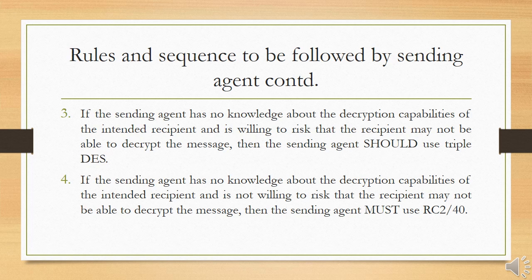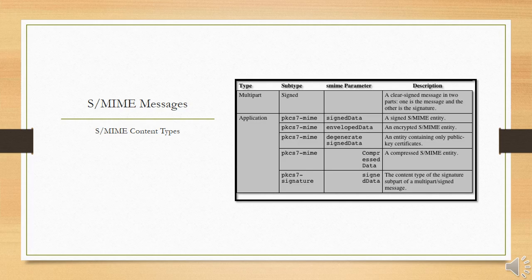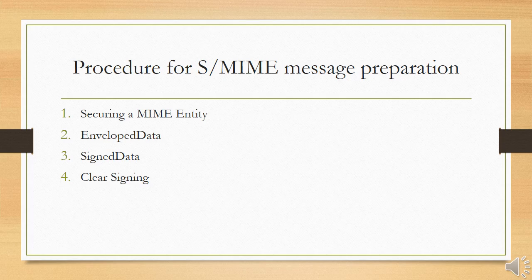S/MIME makes use of a number of new MIME content types, which are shown in the table. All of the new application types use the destination PKCS — this refers to a set of public key cryptography specifications used by RSA laboratories and made available for the S/MIME effort.